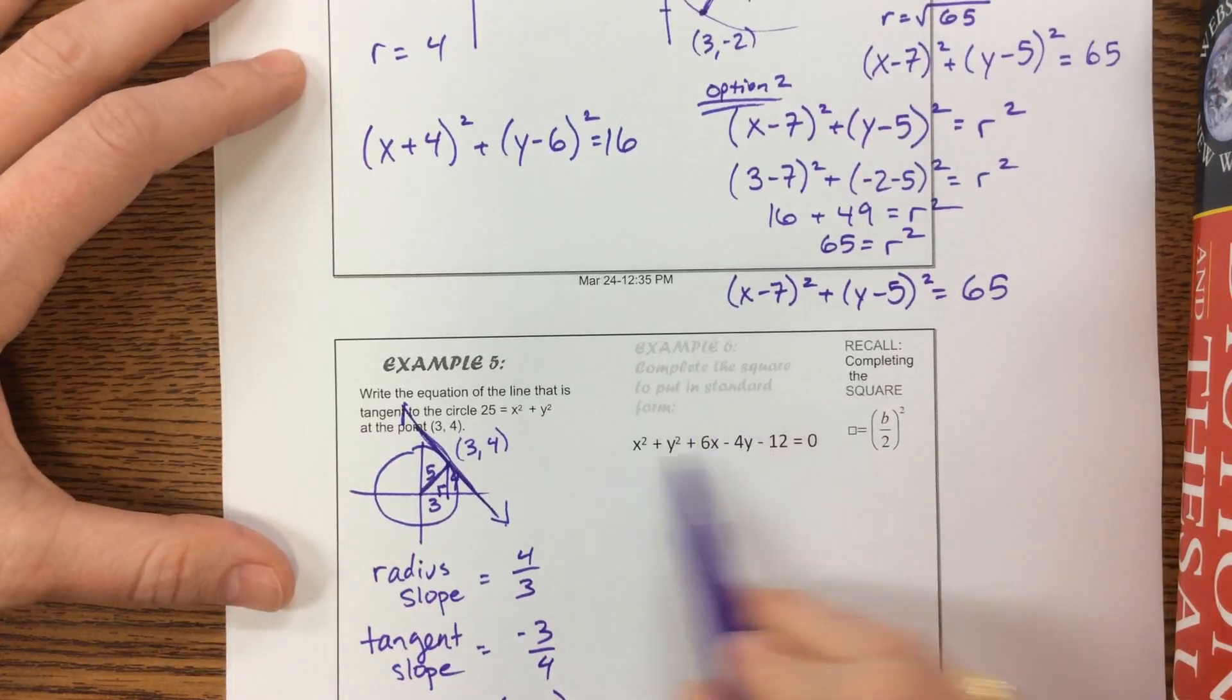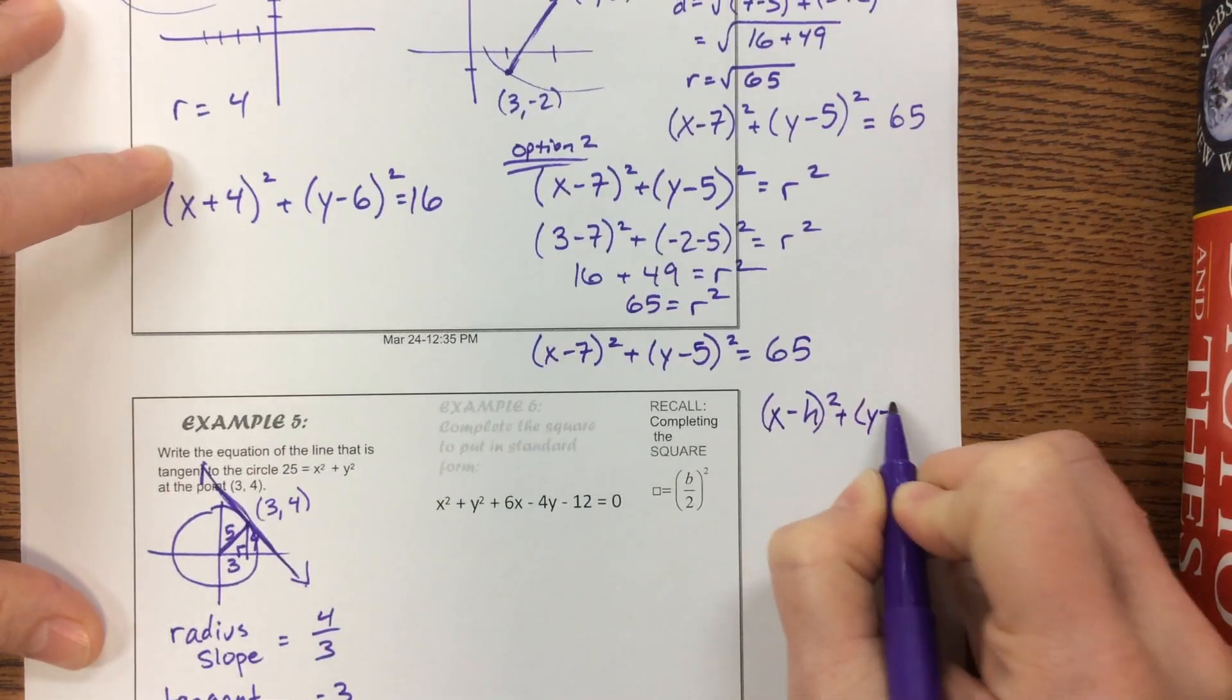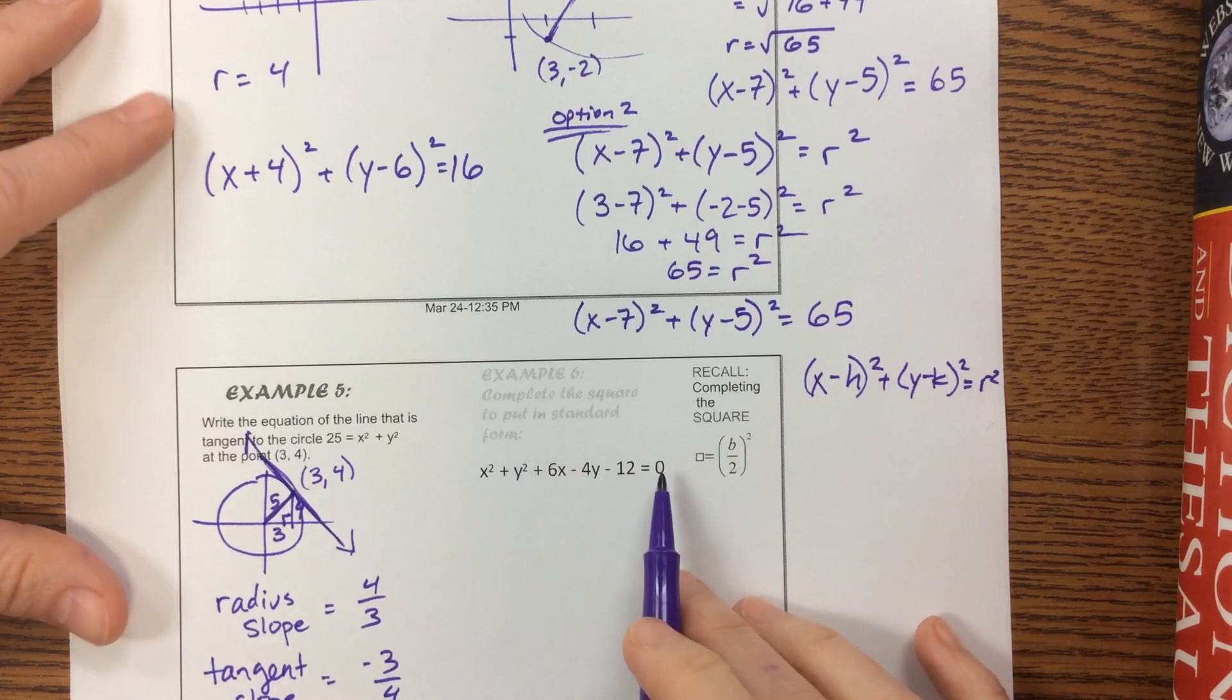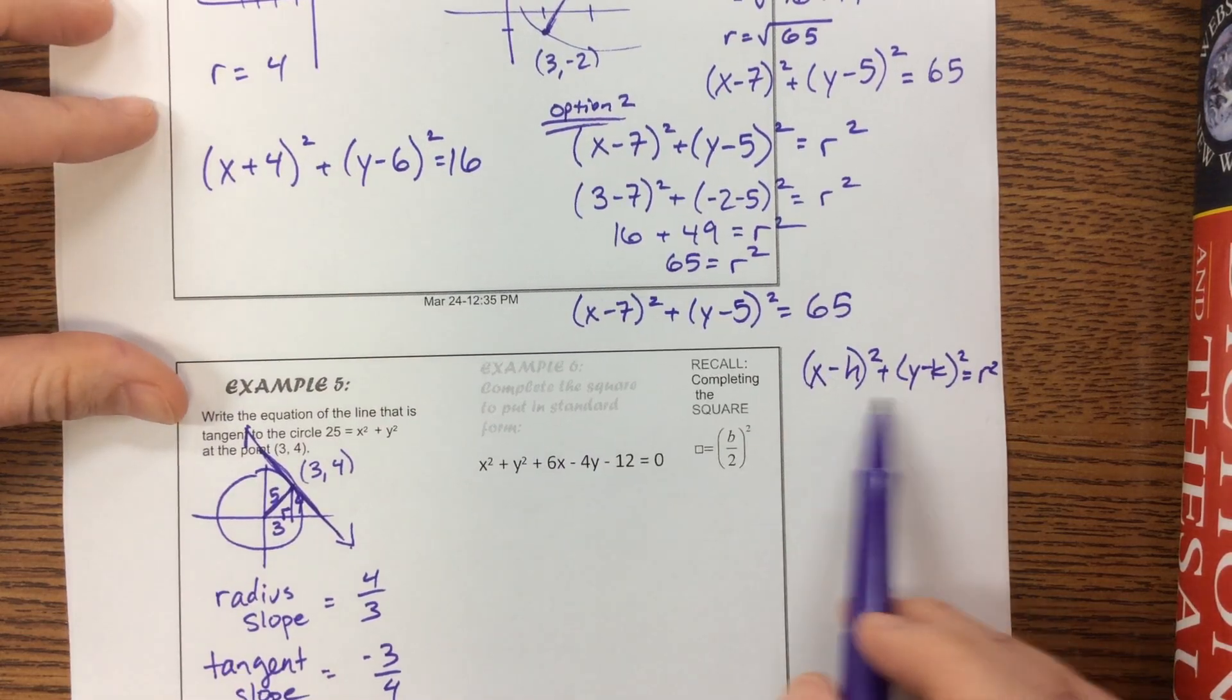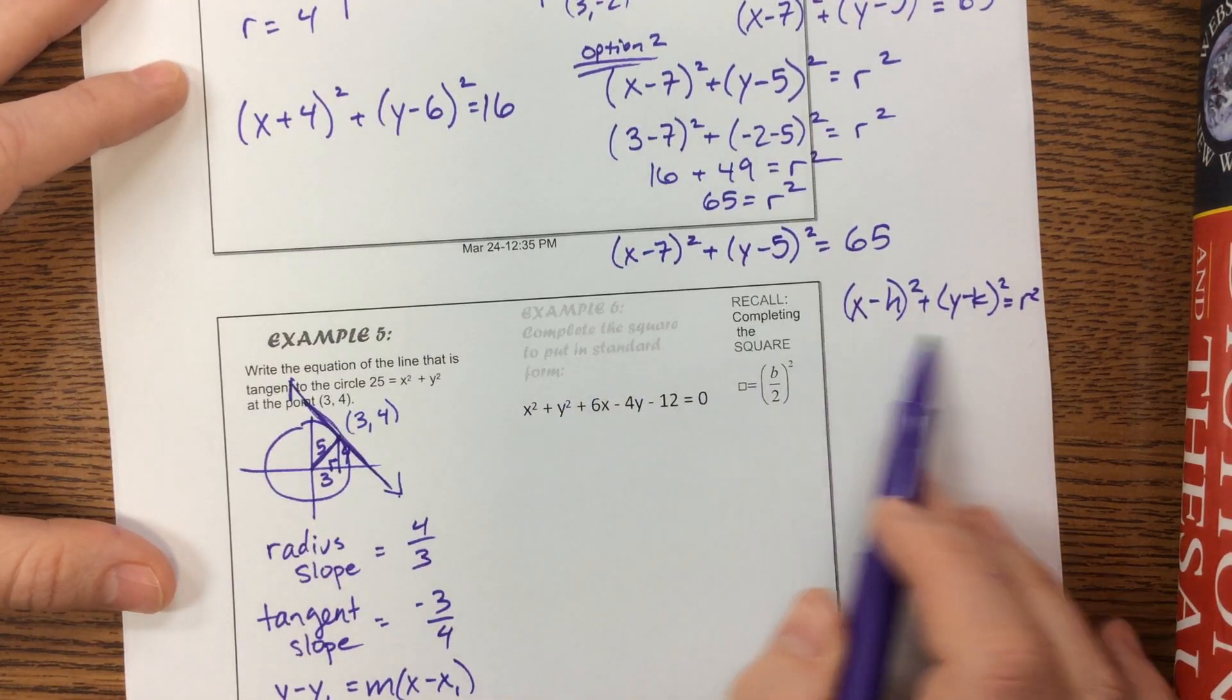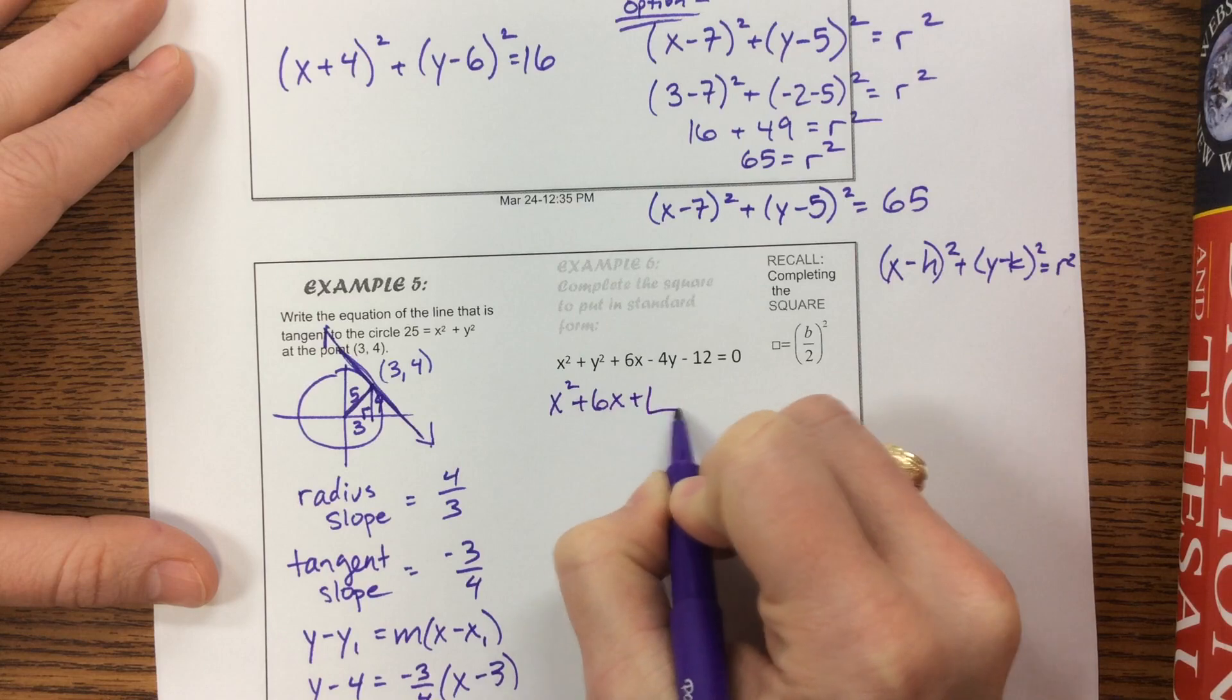The next one, they've taken x minus h squared plus y minus k squared equals r squared, foiled everything out, and given it to you in this form. Different books call different things different names. I'd consider this standard form, though I'd have to check our book. Basically, we need to take this and get it back to the other form, so we're going to complete the square.